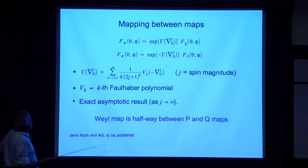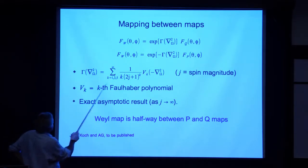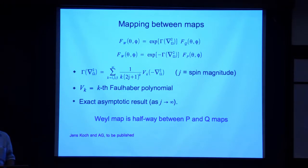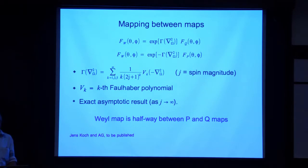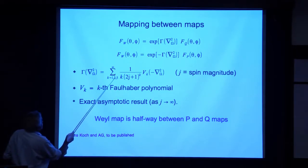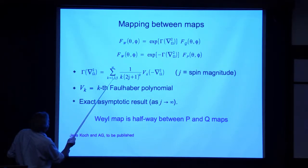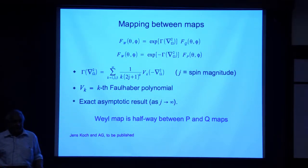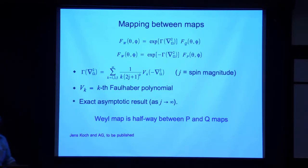This function is expressed as an asymptotic series in inverse powers of J or 2J plus 1. The corresponding thing for particles would be a power series in Planck's constant — the role of Planck's constant in the spin case is played by 1 over J. It turns out to be J plus one half. This is an exact asymptotic result, valid to all powers in J, and it's given in terms of the Faulhaber polynomials. For particles, this series would have only one term — just the Laplacian operator on phase space — whereas here we find something more complicated.